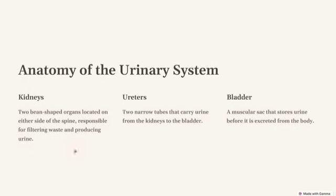So that was a quick recap of how waste filtration, absorption, and reabsorption take place — do check that video as well. Moving further to the ureters: these are two narrow tubes that carry urine from the kidneys to the bladder, acting as a mediator that delivers the formed urine to the bladder.